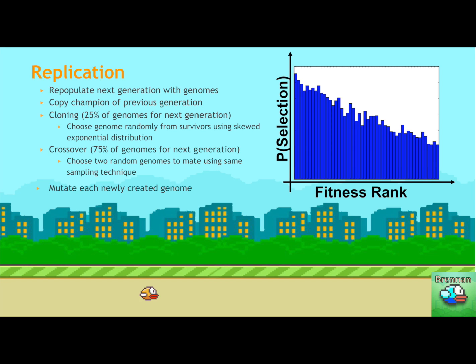And so after we do selection, we do replication. So this means that we need to repopulate the species for the upcoming generation with new genomes. So you always copy over the champion of the previous generation just to maintain the best genome that's ever ran. And apart from copying over this champion, you have roughly 25% of your genomes for your upcoming generation are created from cloning. And the other 75% are created from the crossover. Cloning, as you can imagine, is where we choose a genome randomly from the survivors using this skewed distribution. And what this is is that we have a higher probability of selecting the more fit survivors and the lower probability of selecting the less fit survivors.